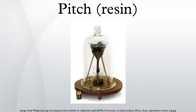The pitch drop experiment taking place at the University of Queensland is a long-term experiment which demonstrates the flow of a piece of pitch over many years. Pitch was put in a glass funnel and allowed to slowly drip out. Since the pitch was allowed to start dripping in 1930, only nine drops have fallen. It was calculated in the 1980s that the pitch in the experiment has a viscosity approximately 230 billion times that of water.